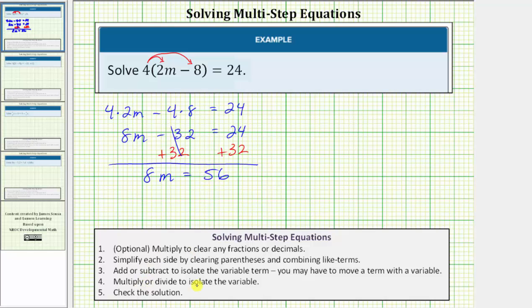The next step, we multiply or divide to isolate the variable. Eight m means eight times m. We want to undo this multiplication by performing the opposite or inverse operation. The opposite operation of multiplication is division. So for the next step, we divide both sides by eight.